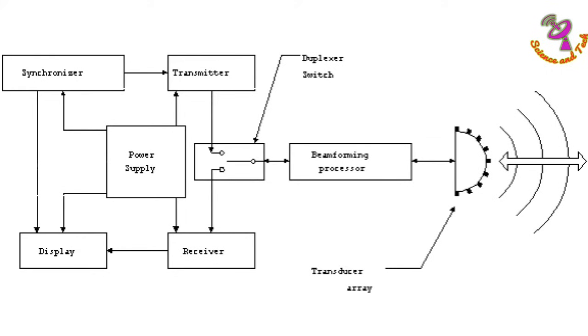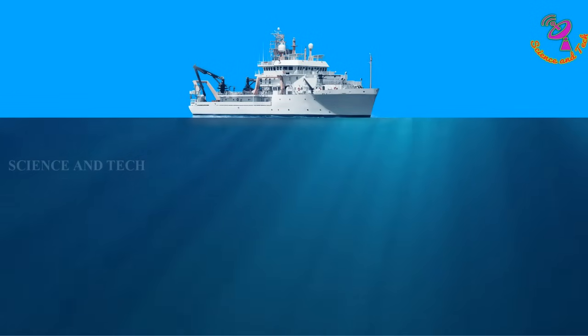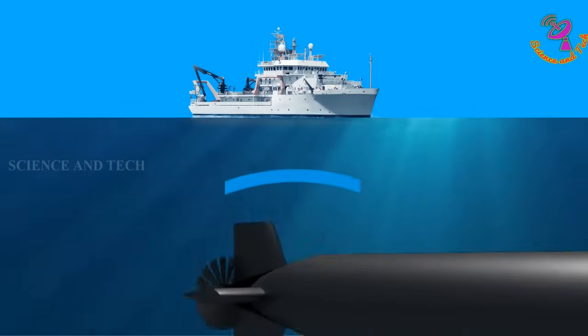Passive sonar will not spread any sound but can absorb sound signals from any animal or submarine. If any object or animal is underwater without sound, it can't detect it, but active sonar can, even though it has a big disadvantage.